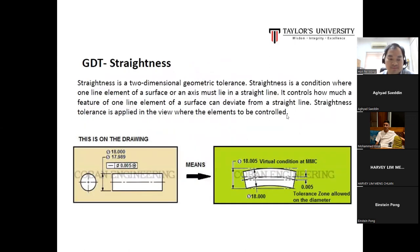Straightness is a two-dimensional geometry tolerance. Straightness is the condition where one line element of a surface must lie in a straight line. It controls how much a feature of one line element of a surface can deviate from a straight line. Straightness tolerance is applied in the view where the element is to be controlled. As you can see the drawing on the left-hand side, but when the part is manufactured, the QC engineer will do the quality checking, so this is the exact dimension.